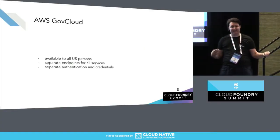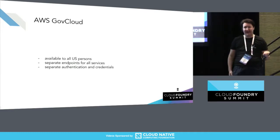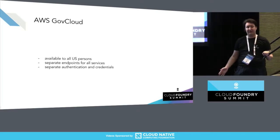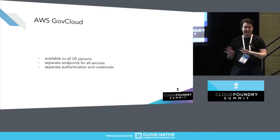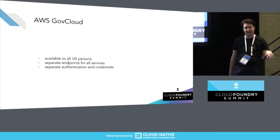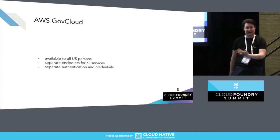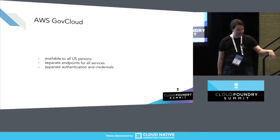AWS GovCloud is, in many respects, just like any other AWS region — it has its own endpoints for all the services. The difference is it is only available to U.S. persons. You have a separate set of credentials for your AWS GovCloud account versus your regular AWS account. If you are a U.S. national or working at a U.S.-based company, you could sign up for a GovCloud account and start using it today.